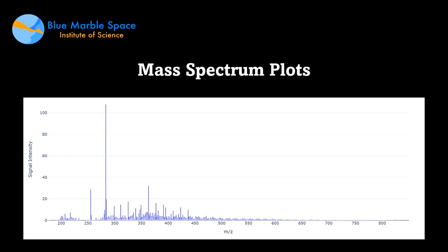These mass to charge ratios are plotted according to their signal density in the dataset we were provided with. Each peak on this graph actually represents a different molecule or a fragment of a molecule that has been detected in the sample. You can see this particular peak shows a high signal intensity.